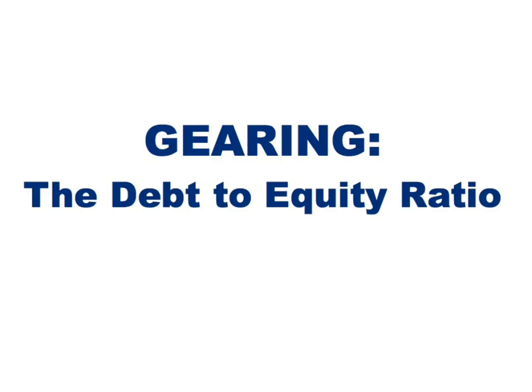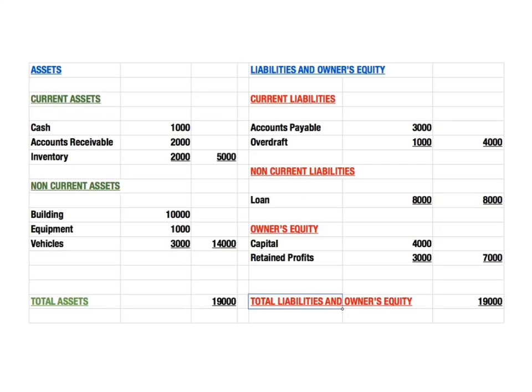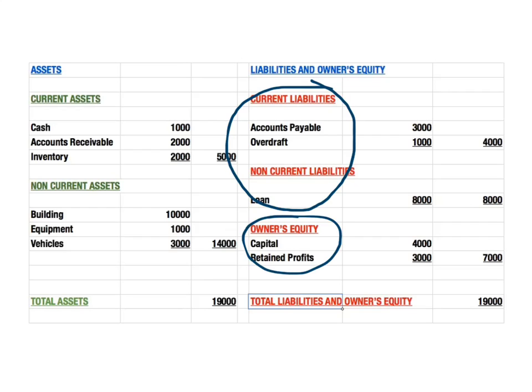To understand how these things relate, you should watch the video about the accounting equation. The debt-to-equity ratio divides the total liabilities of the business by the owners' equity. Other videos on this channel go through this balance sheet in detail. For this equation, we're looking at the total liabilities — which includes current and non-current liabilities — and the owners' equity, just on this side of the balance sheet.